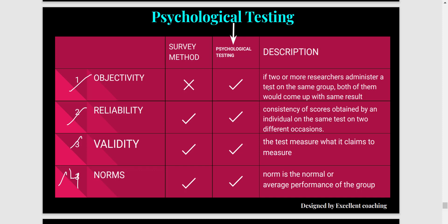Objectivity means that if two or more researchers administer a test on the same person, both would come up with the same result. For example, if I am assessing one of my students and I leave the school and another teacher comes in my place and also assesses the same student, the result of my assessment must be very similar to the result of the other teacher's assessment.